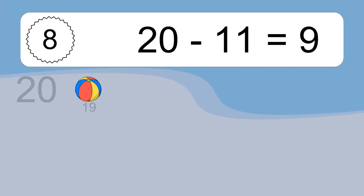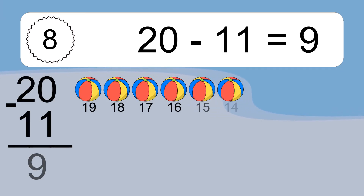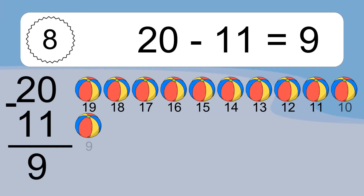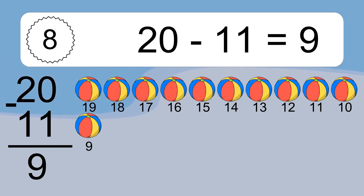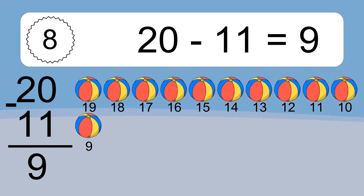20 minus 11 equals what? 20 minus 11 equals 9. Let's count it: 19, 18, 17, 16, 15, 14, 13, 12, 11, 10, 9.